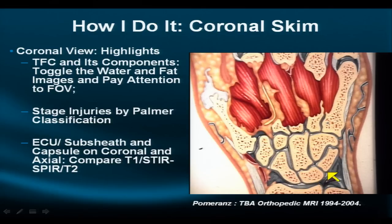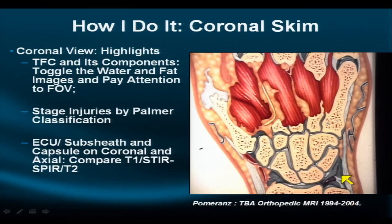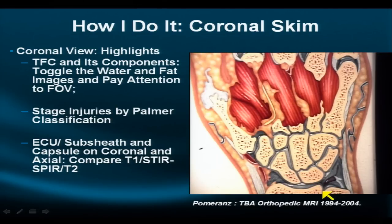Let's take our diagram of the coronal projection, in which we see all of the bones of the carpus: the scaphoid, the lunate, the triquetrum, the trapezium, the trapezoid, the capitate, and the hamate, as well as the triangular fibrocartilage and a few of its peripheral attachments — the ulnar meniscus homolog, the extensor carpi ulnaris. This projection allows us to focus on the TFC and some of its distal and peripheral attachments.